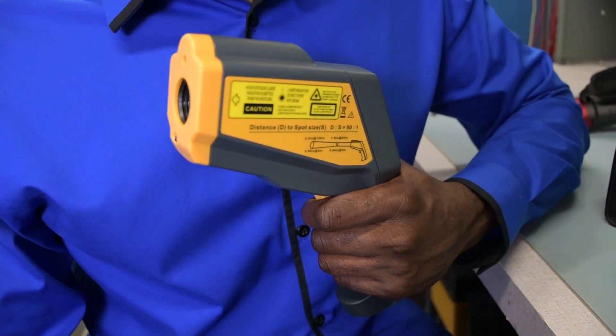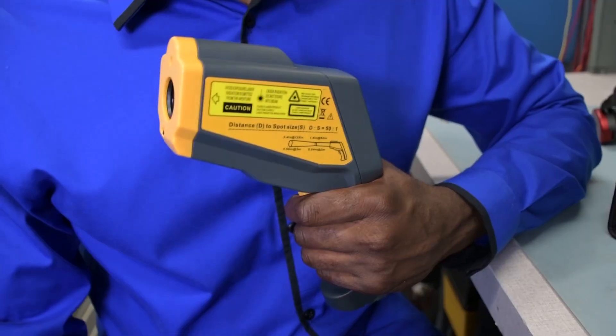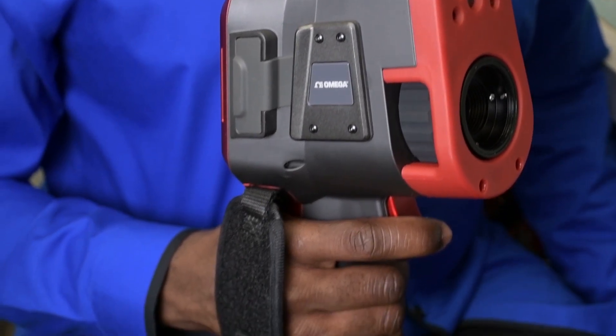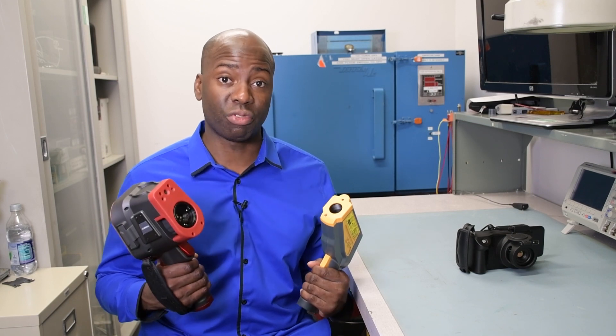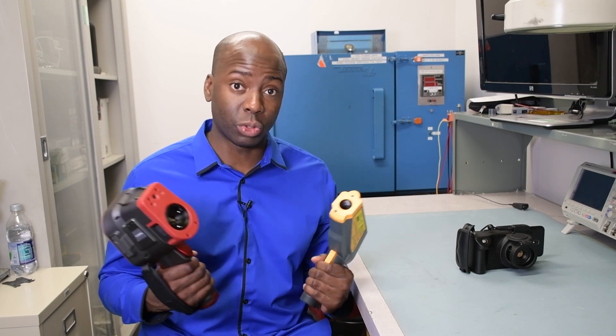Infrared thermometers, sometimes referred to as IR guns, and thermal imaging cameras, sometimes referred to as thermal imagers. Both work on the same basic principle, sensing an object's infrared radiation and translating it into a temperature reading. But that's where the similarity ends.